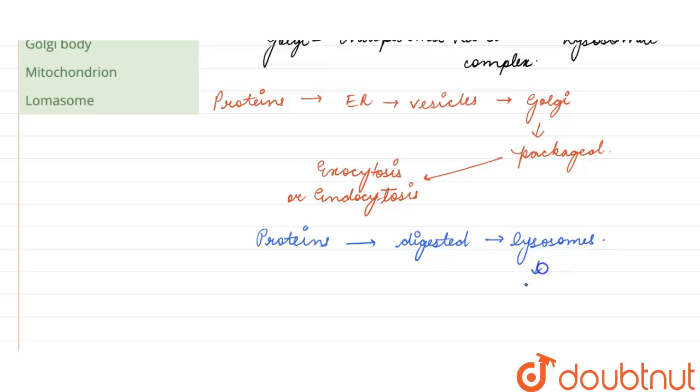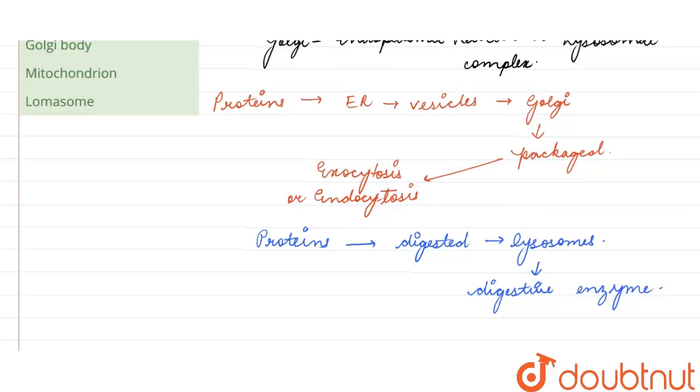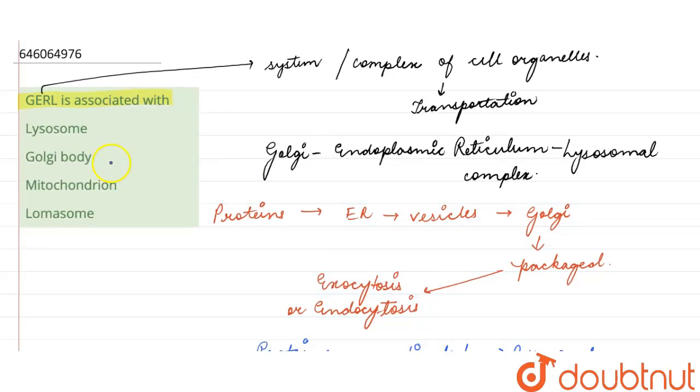Which consist of various digestive enzymes. So from the options given to us, the correct answer here will be Golgi body, because if endoplasmic reticulum would have been given then we would have marked that, but since Golgi body is given, then we will mark this because it is required for the transportation and packaging of these molecules that are supposed to be transported inside the cell.